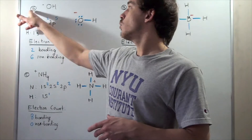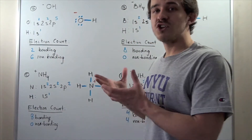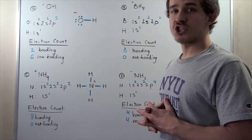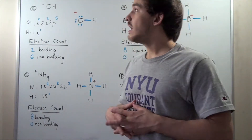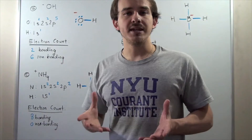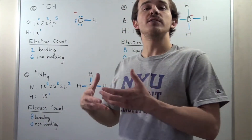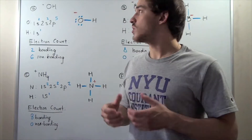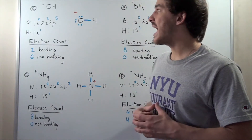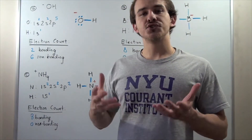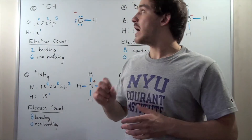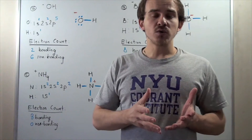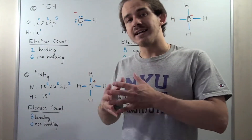Let's begin with A. In A we have an OH, or a hydroxide molecule, that has a negative one charge on the oxygen. That negative one charge on the oxygen simply means that oxygen has one more electron than it does in its neutral state. In its neutral state, oxygen has eight electrons and eight protons. A charged negative one oxygen has eight protons but nine electrons.